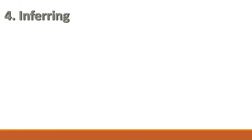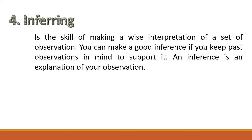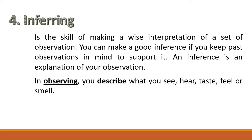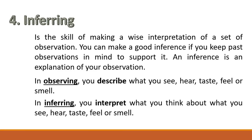The next science process skill is inferring. Inferring is the skill of making a wise interpretation of a set of observations. You can make a good inference if you keep past observations in mind to support it. An inference is an explanation of your observation. In observing, you describe what you see, hear, taste, feel, or smell. While in inferring, you interpret what you think about what you see, hear, taste, feel, or smell. You can now see the difference between observing and inferring.